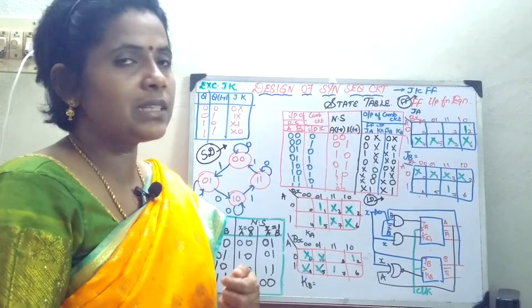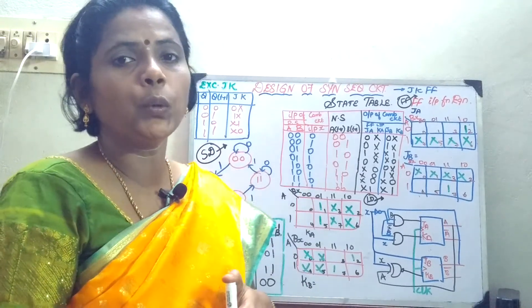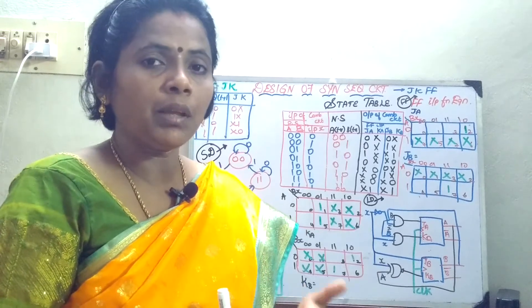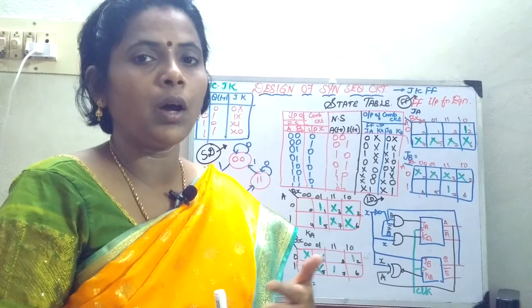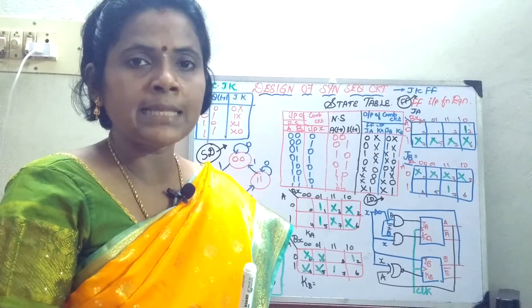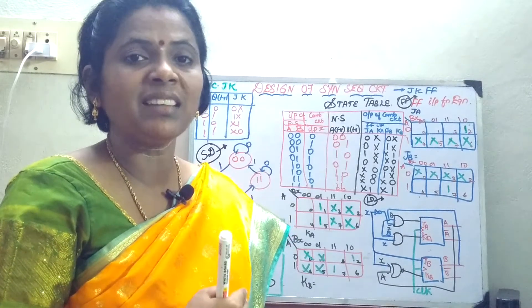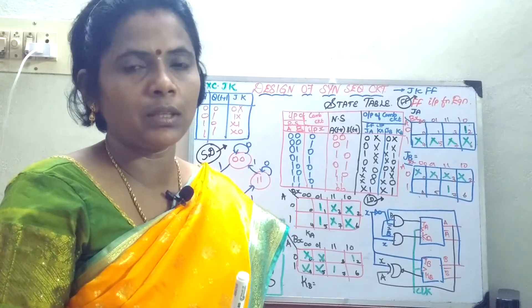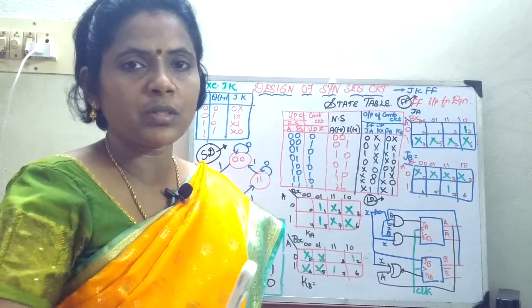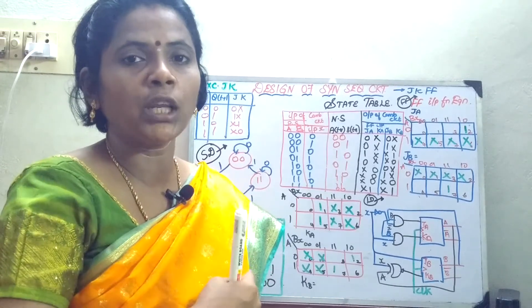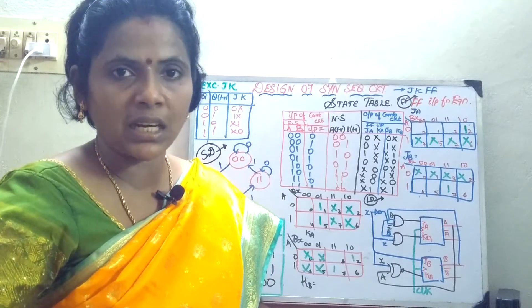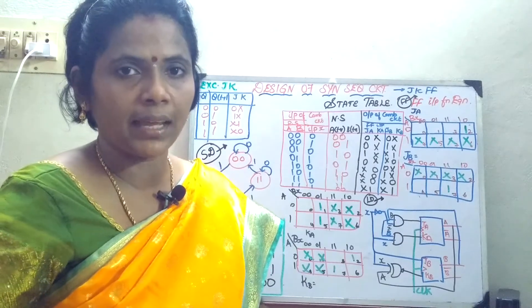In today's class, we will see how to design a sequential circuit. In the previous classes, we have learnt about how to design a Mealy circuit and a Moore circuit — that is, we have done the analysis, starting from the state table, how to proceed, starting from your input functions, how to proceed with the state table and arrive at the state diagram.